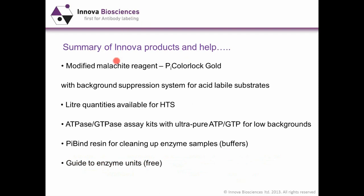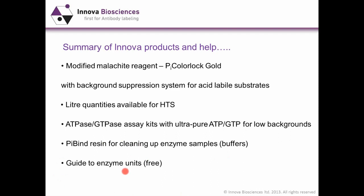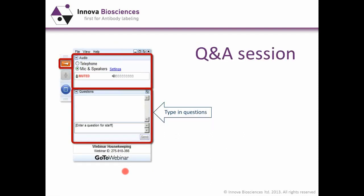Finally, a summary of Innova products and help we can provide. We have the modified malachite reagent PI ColorLock Gold with its background suppression system; liter quantities are available for high-throughput screening applications. We have ATPase and GTPase assay kits with ultra-pure substrate for low backgrounds. We have PI-bind resin, which is great for cleaning up enzyme samples or buffers. And if you struggled with the enzyme unit discussion at the beginning, we also have a free guide to enzyme units on our website. Thanks for your attention today.